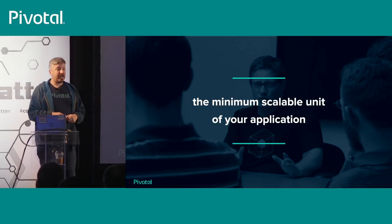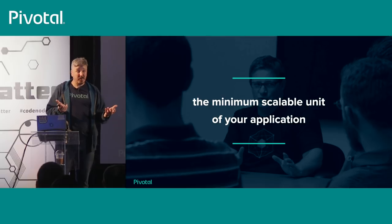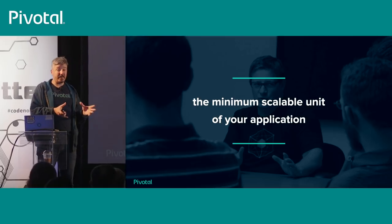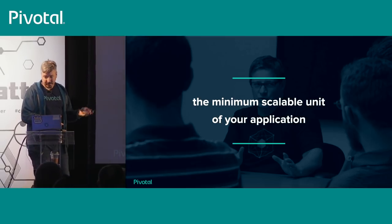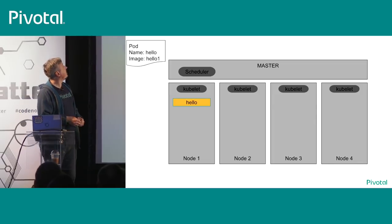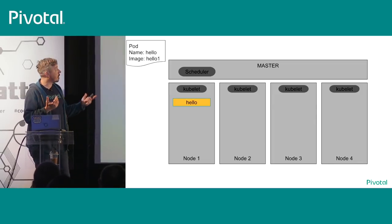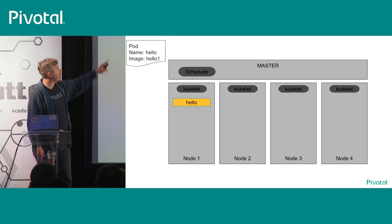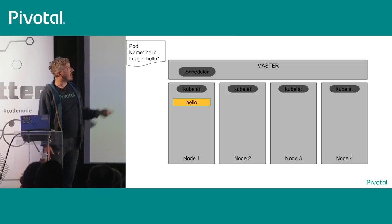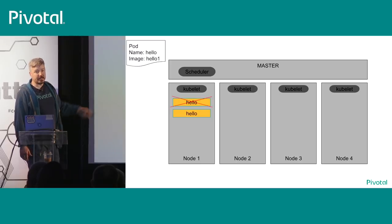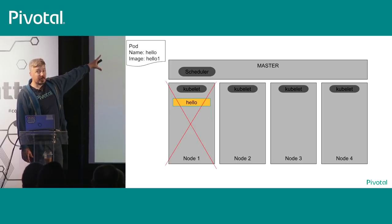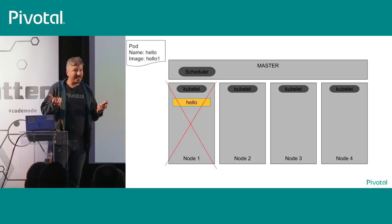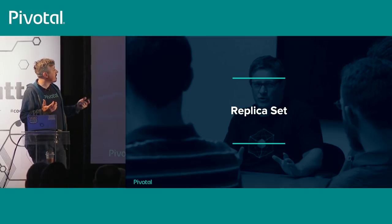The pod is really the minimum scalable unit of your application. In my PHP WordPress example, you wouldn't put MySQL in the same pod — it's a different scalable unit. You do a kubectl apply or kubectl run, the scheduler picks a worker node to run it on, and kubelet is responsible for keeping that pod running — if the pod dies, kubelet will restart it. But if the whole node dies, you lose your application, which isn't very highly available.